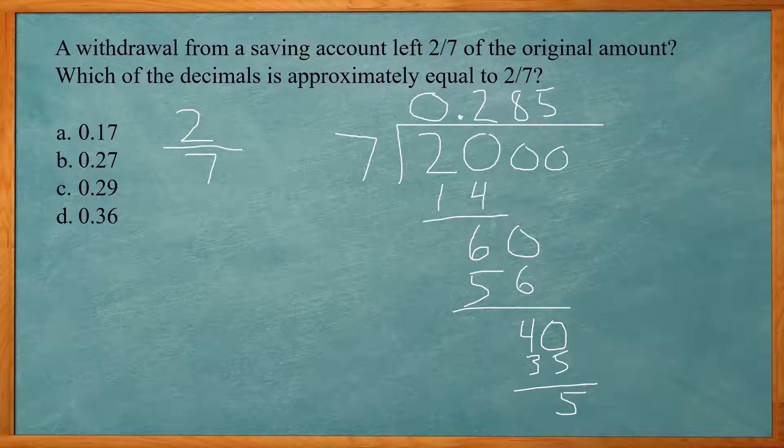Now when you're rounding to a hundredth, the second position where the eight is, you look behind it. If it's five or higher, you're going to round up the number in front of it. So this is five. So that means the eight will go to nine. So 0.29. So answer choice C.